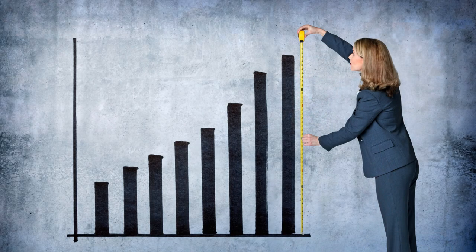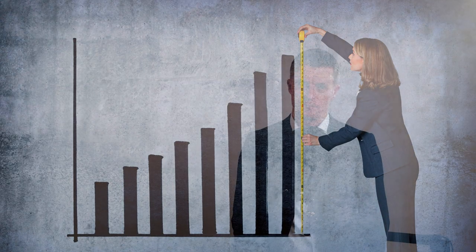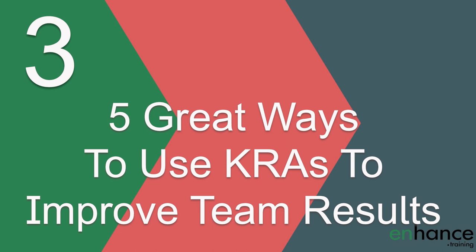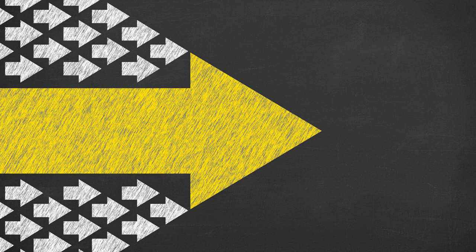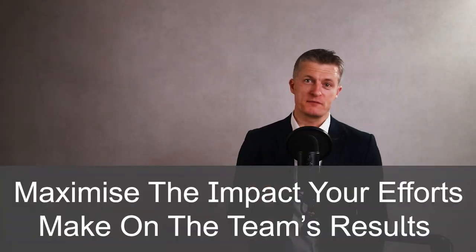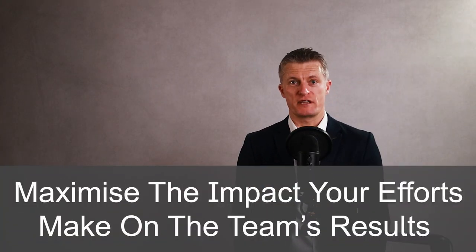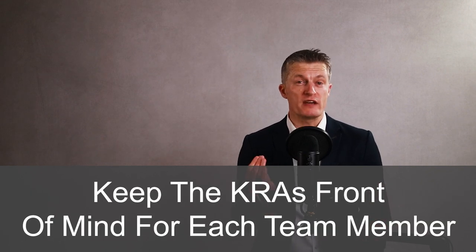This is a great way to use key result areas to improve team performance. Keeping these KRAs front of mind with employees is an even bigger challenge, so here are five great ways to use key result areas to improve team performance. Having invested the time and effort to align the team to the wider business strategy and capture each team member's KRAs, you want to maximise the impact your efforts make on the team's results and performance.